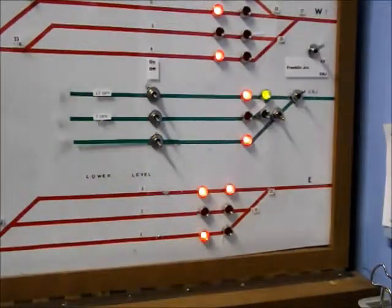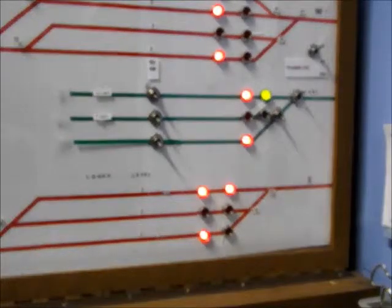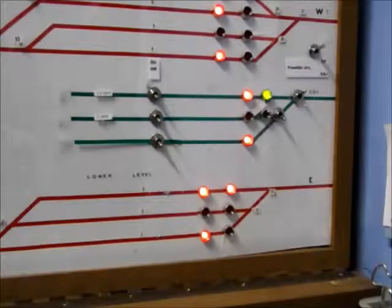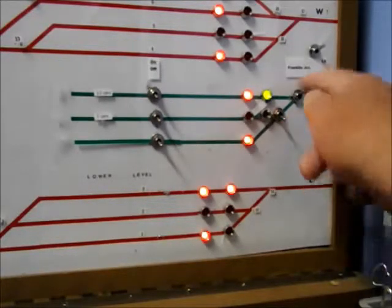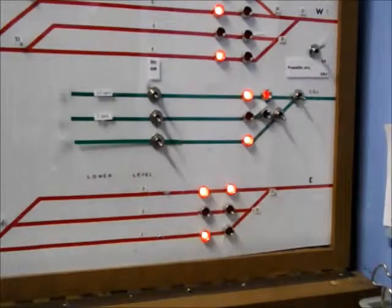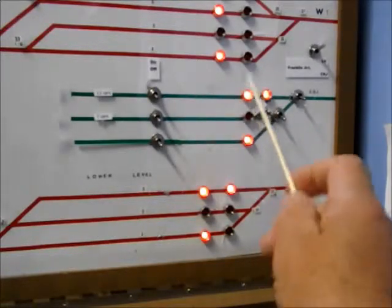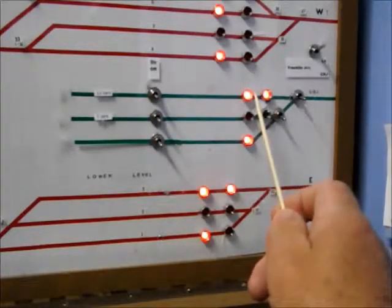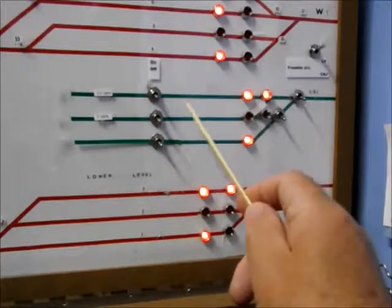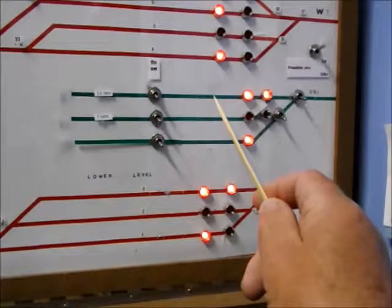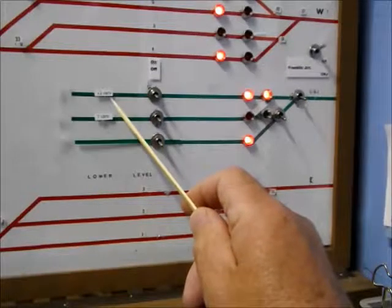The three staging tracks on the eastern end of the line are controlled from the dispatcher's panel. They are tortoise operated with indicators. There are occupancy indicators. Track one east is occupied by a mainline freight. It can store up to 12 cars.